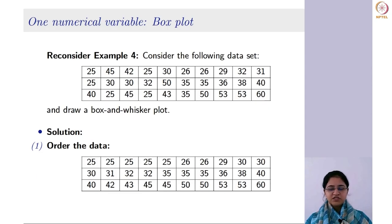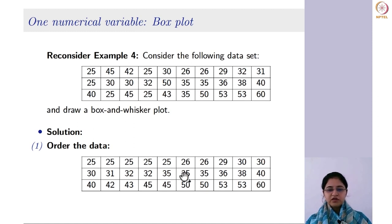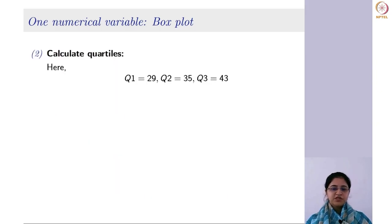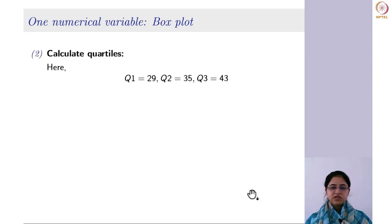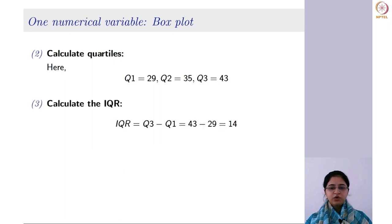The median is the middle value of the dataset. In this case, since there are 30 observations, the median will be the average of the middle two observations. These two observations are the midpoints, so the average — that is the median — will be 35. So median Q2 is 35. The first quartile Q1 is 29, and the third quartile Q3 is 43. Based on this, you can find the IQR which is 14.